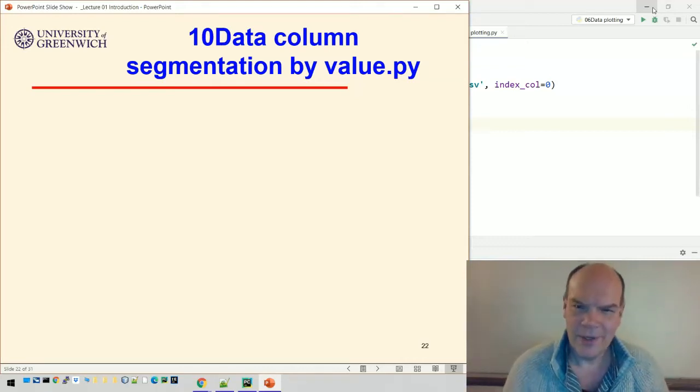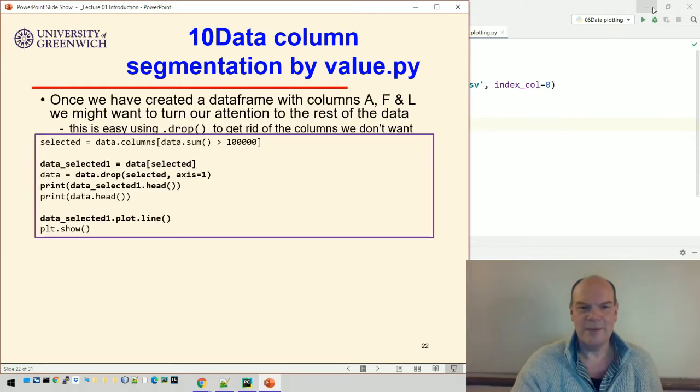So we've seen how to pick out different columns in different ways. What if we want to split our data set into all the really high selling products and all the low selling products and all the ones in the middle? We can do that using what's called segmentation.